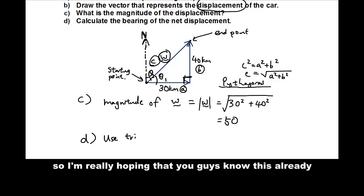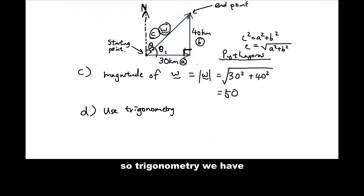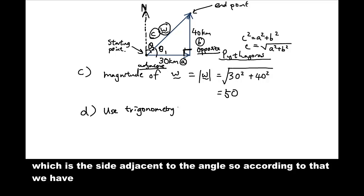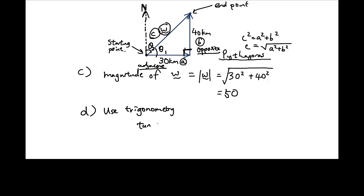And the way you would do that is you use trigonometry. So I'm really hoping that you guys know this already. So trigonometry, we have the opposite side, which is the side opposite theta. And we have the adjacent side, which is the side adjacent to the angle. So according to that we have tan theta is equal to opposite over adjacent.